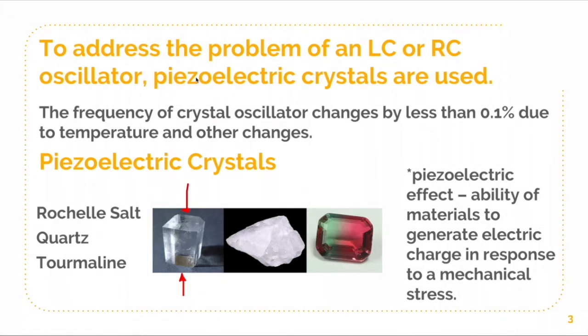The frequency of a crystal oscillator changes by less than 0.1 percent due to temperature and other changes. So basically, you can consider that the temperature does not greatly affect the output frequency of a crystal oscillator.